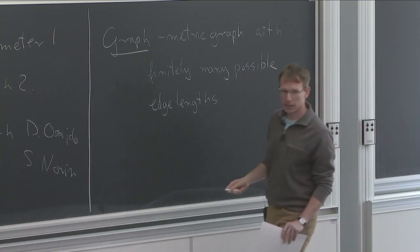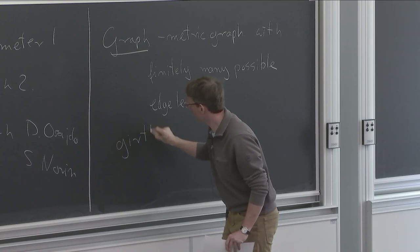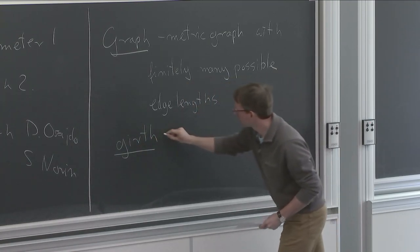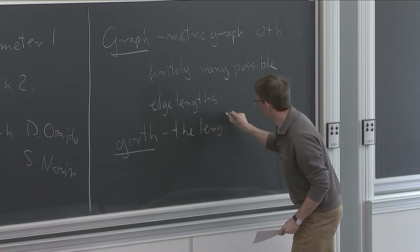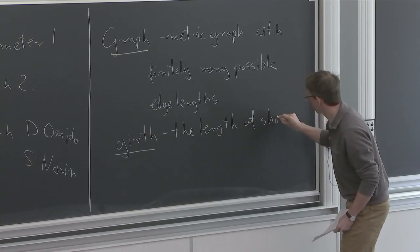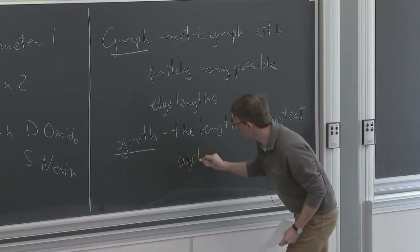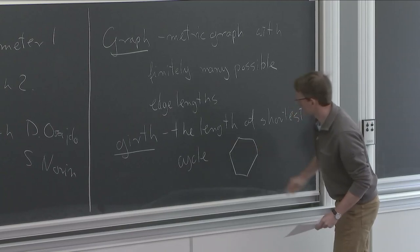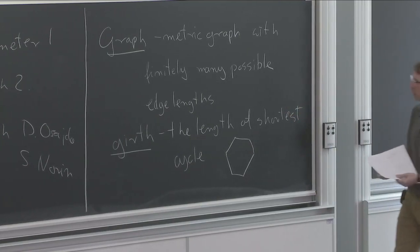Let me say what the girth of a graph is. Once you have a graph, its girth is the length of the shortest cycle, where the cycle is just an embedded closed edge path in the graph.